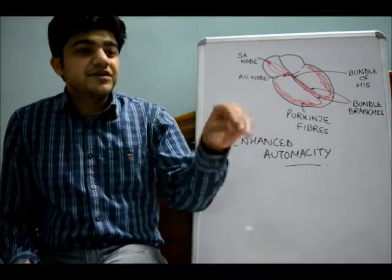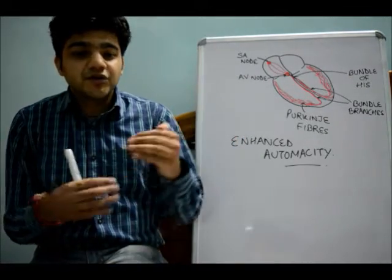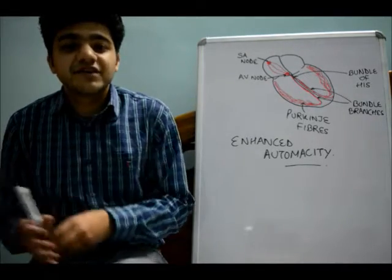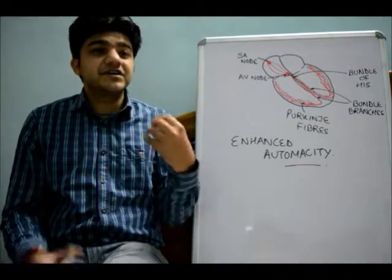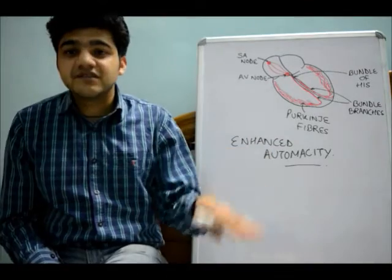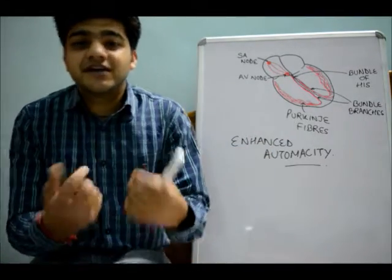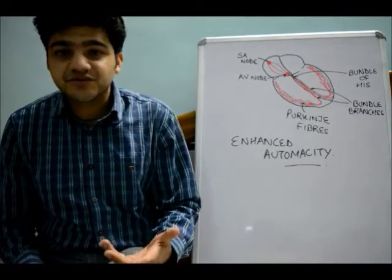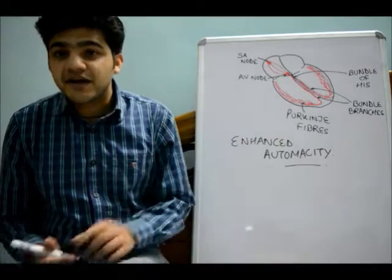If we increase sympathetic tone, SA node automaticity is increased, so the rate of firing goes higher. In contrast, if we increase the parasympathetic nervous system, it decreases SA nodal automaticity. So automaticity can be enhanced when there is sympathetic or adrenaline stress — that could be one reason for enhanced automaticity.